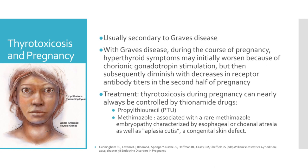The overwhelming cause of thyrotoxicosis in pregnancy is Graves' disease, and this is an organ-specific autoimmune process associated with thyroid-stimulating TSH receptor antibodies. Because these antibodies are specific to Graves' hyperthyroidism, such assays have been proposed for diagnosis, management, and prognosis in pregnancies complicated by hyperthyroidism. With Graves' disease during the course of pregnancy, hyperthyroidism symptoms may initially worsen because of chorionic gonadotropin stimulation, but then subsequently diminish with decreases in receptor antibody titers in the second half of pregnancy.